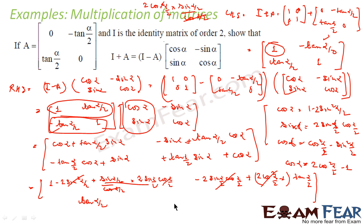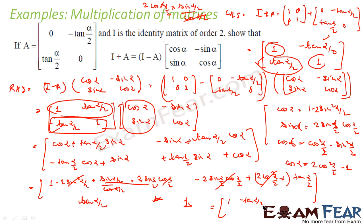So I have proved that RHS = [[1, -tan(α/2)],[tan(α/2), 1]], which equals LHS. Hence the equation is proved. This question is a little complex because trigonometry concepts are required. If you do not know trigonometry, please watch my trigonometry videos to get your concepts clear — there are memory tips available too. The formulas used here include cos(A+B), cos(A-B), and sin(A+B).